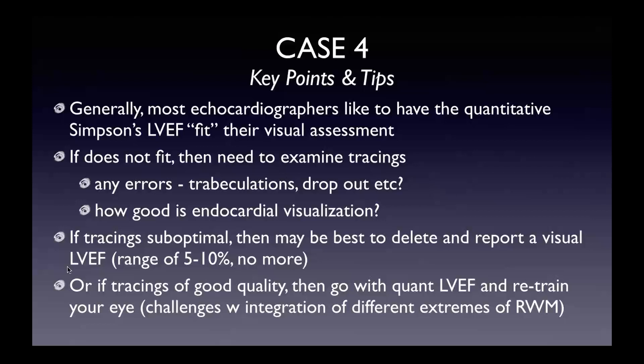If you have to go beyond 10% range, it might be best to state the LV EF is not normal but you can't quantify. If the tracings are of good quality, you're probably better off going with the quantitative LV EF, then retrain your eye — because you could be very consistent with qualitative assessments but systematically over or underestimating EF if you don't have that quality check. You may have a systematic error of plus or minus 5 to 10% if you don't calibrate against quantitative LV EF. We also have challenges integrating very different extremes of regional wall motion — particularly hyperkinetic basal segments and completely dyskinetic apical segments, as in Takotsubo cardiomyopathy.